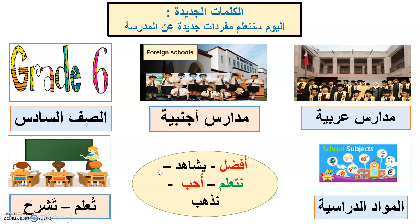Also I can use these verbs: أفضل — prefer. Which one do you prefer — مدارس عربية or مدارس أجنبية? A student says: أنا أفضل المدارس الأجنبية. Also: أنا أحب — like — المدارس العربية ومدارس أجنبية.